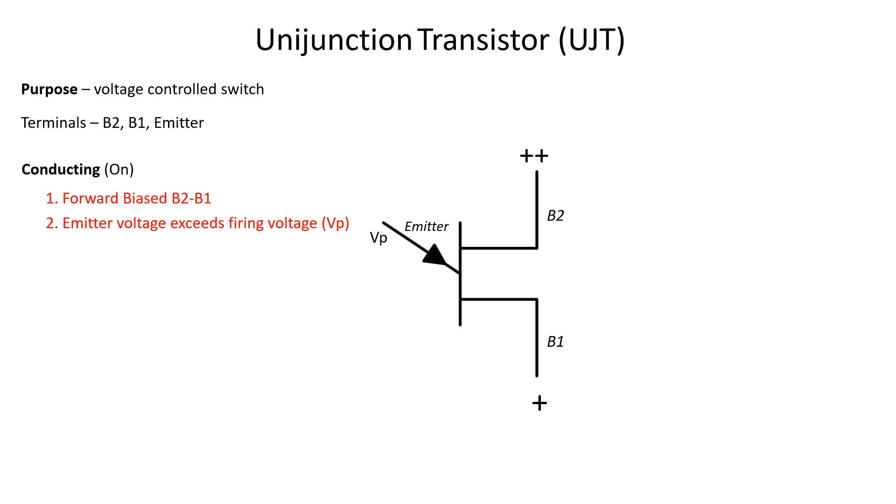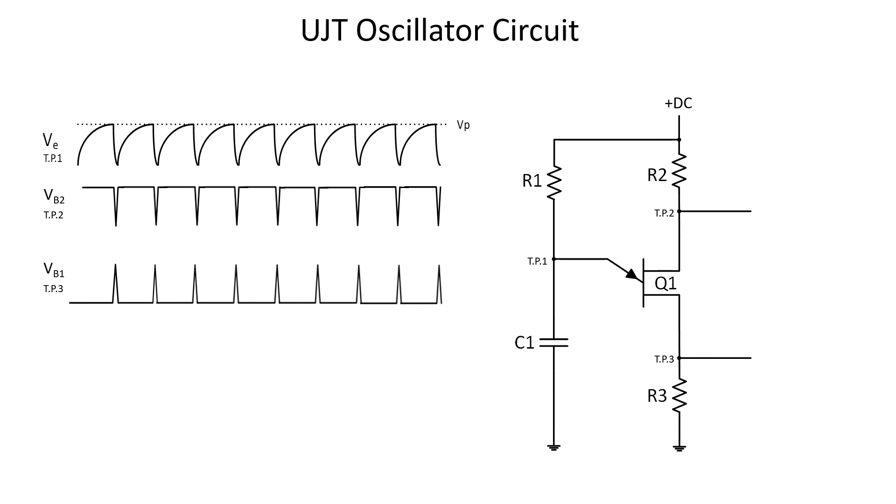So, let's take the UJT and put it into an oscillator circuit. Take a look at R1 and C1 on the left. They're going to make up an RC time constant, so we know C1's going to be charging and discharging, developing a sawtooth waveform on test point 1. Before we talk about that though, as soon as we apply DC voltage, Q1 is automatically forward bias, base 2 to base 1. But the UJT is off because that's only one of the requirements. With it off, the outputs will look like this because there's no current flow.